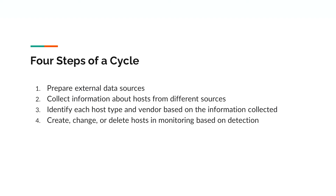A cycle refers to the entire process or operation of Omnisaya. There are four major steps that Omnisaya has to complete for a full cycle. Ideally, a cycle should be completed once per day to keep all information accurate. The cycle length depends entirely on the compute resources available and the size of the network. The steps are: one, prepare external data sources; two, collect source information about hosts from different sources; three, identify each host type and manufacturer based on the information collected; and four, create, change, or delete hosts and monitoring based on detection.